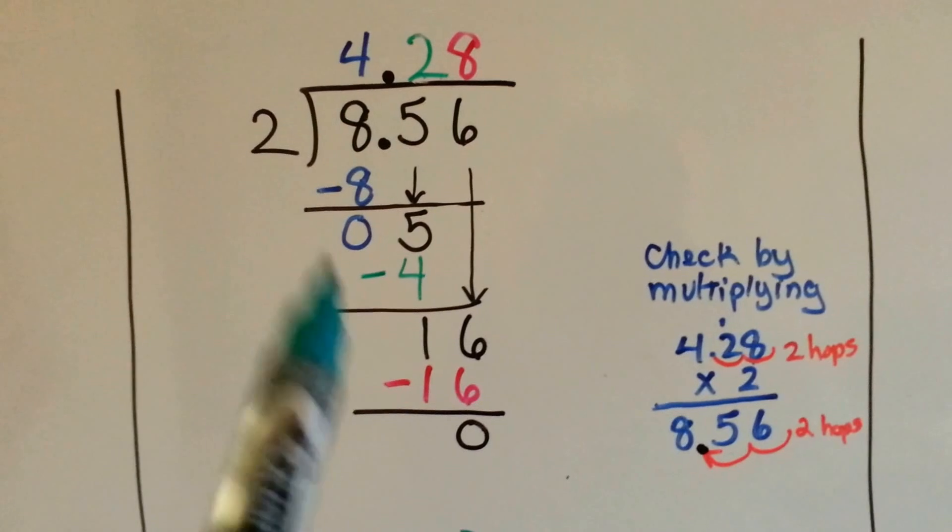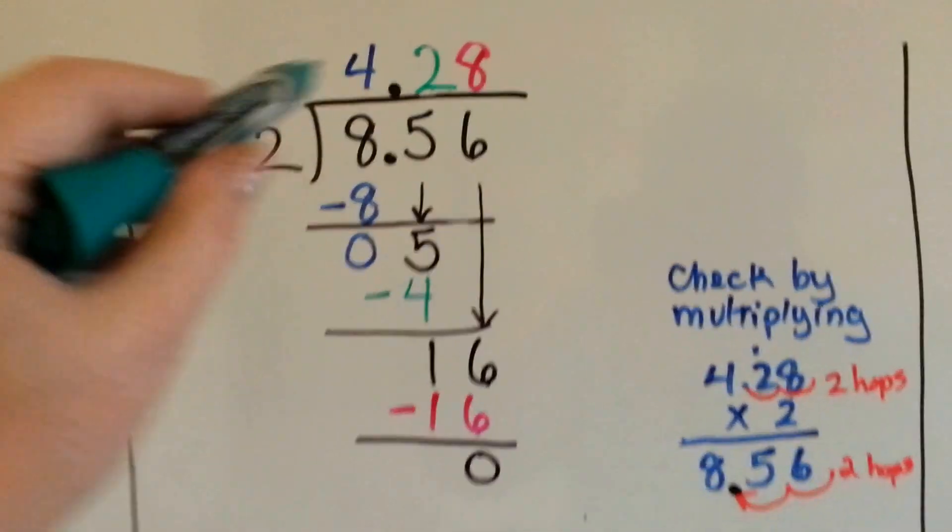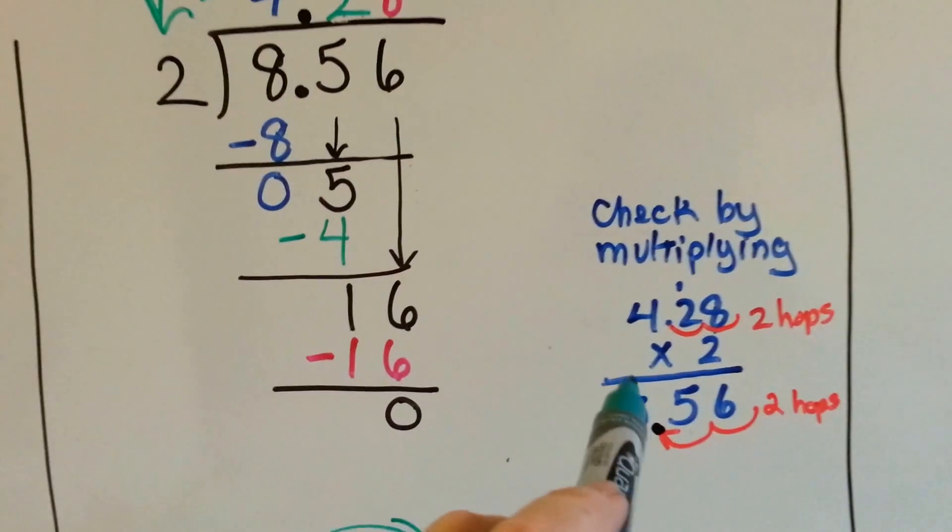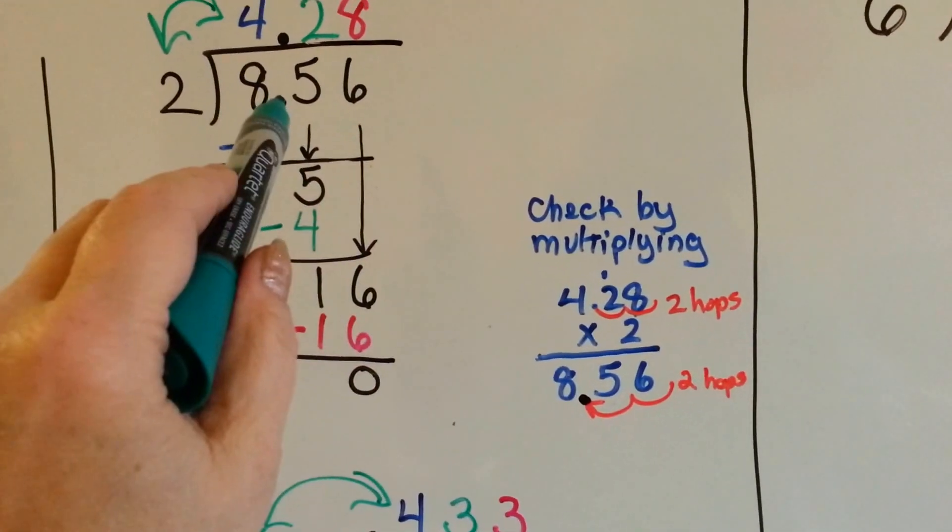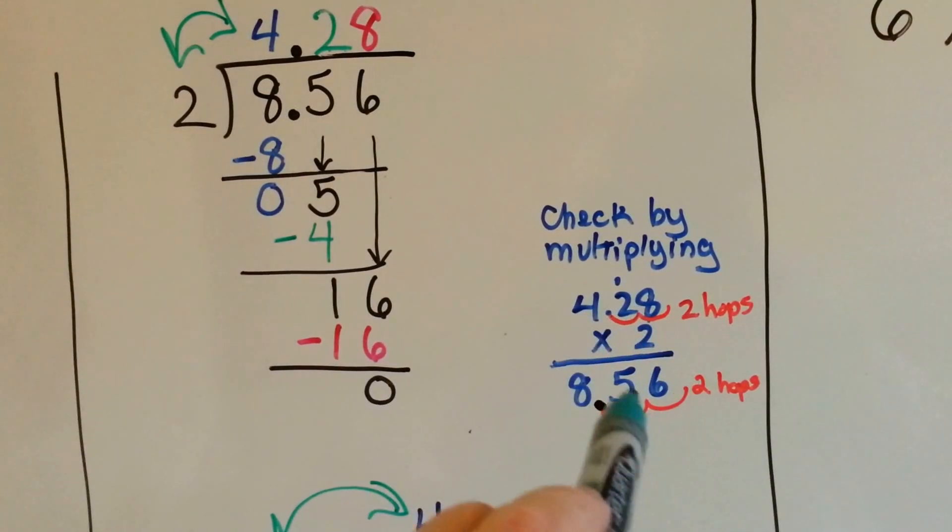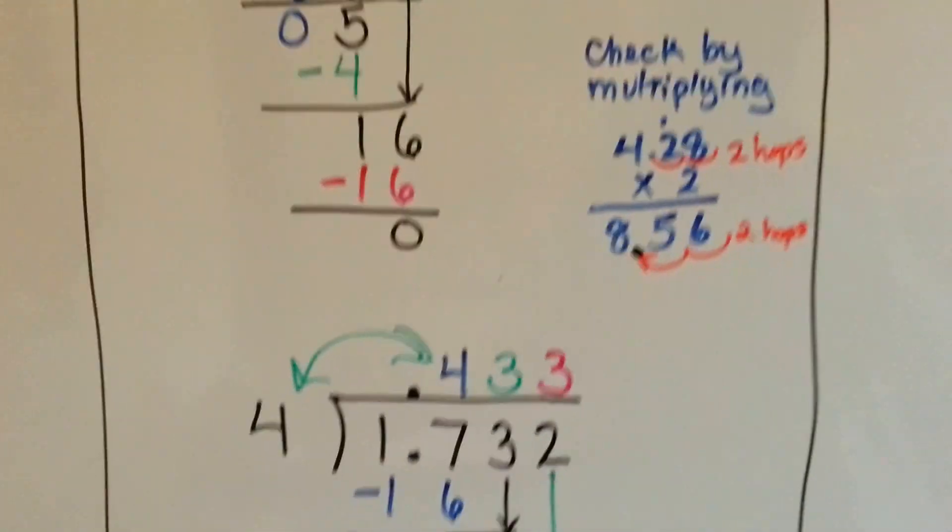And then to make sure we did it correctly, what we do is we check by multiplying. We multiply the 4.28 quotient by the divisor, and if it comes out as the same number as the dividend, which it did, we count the hops to make sure the decimal point's in the right place, then we know we got the right answer.